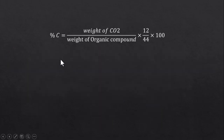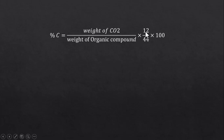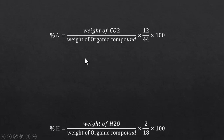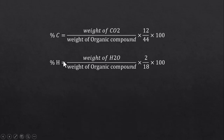The percentage of carbon can be calculated through carbon dioxide using this expression: weight of carbon dioxide divided by weight of organic compound, multiplied by 12 divided by 44, into 100. Similarly, the percentage of hydrogen in the water can be calculated using this simple equation.